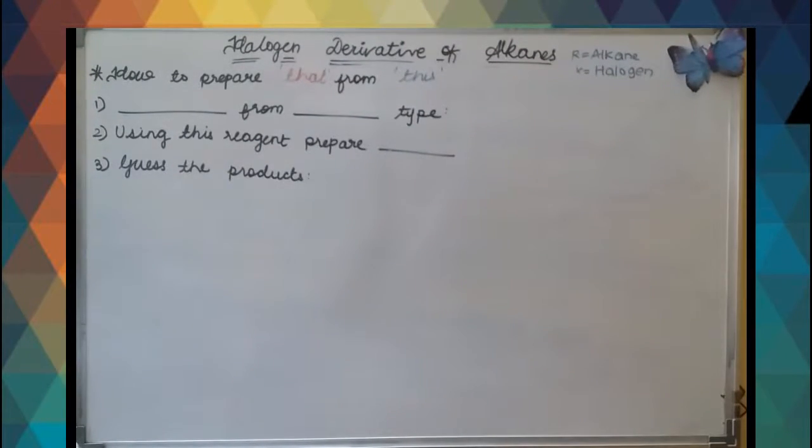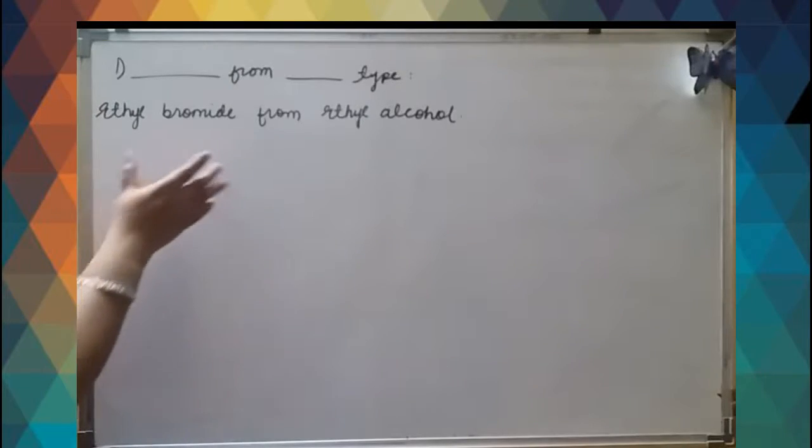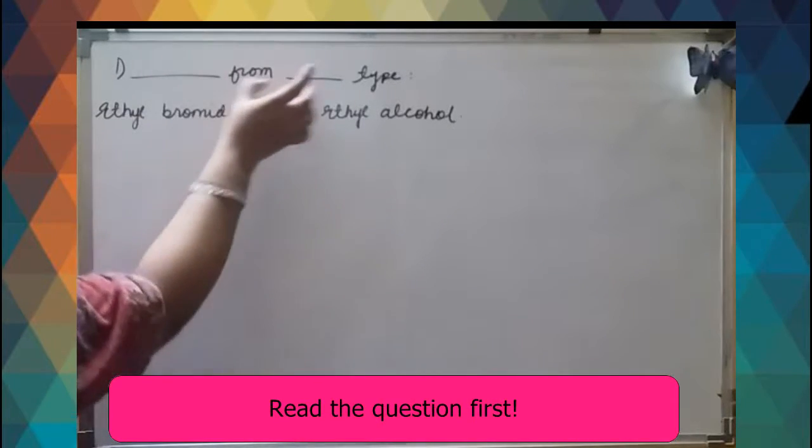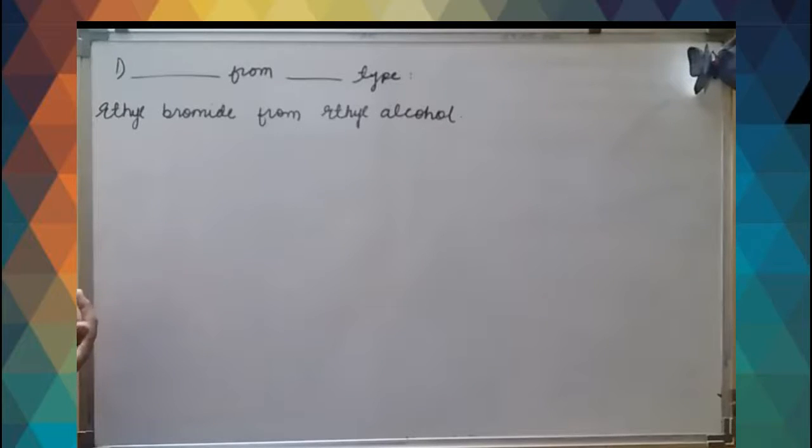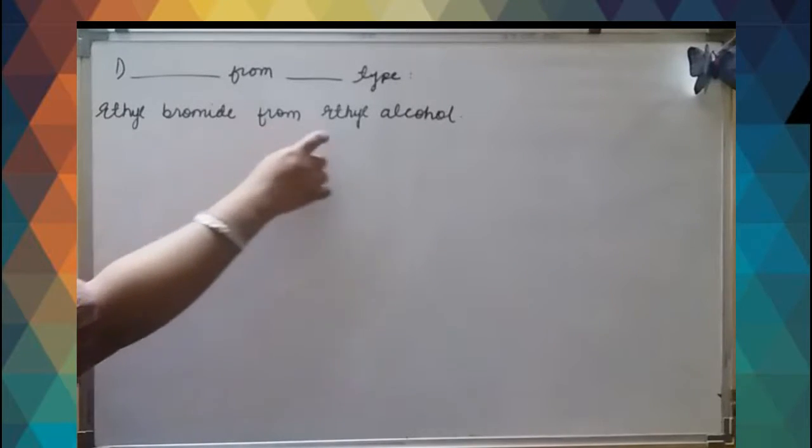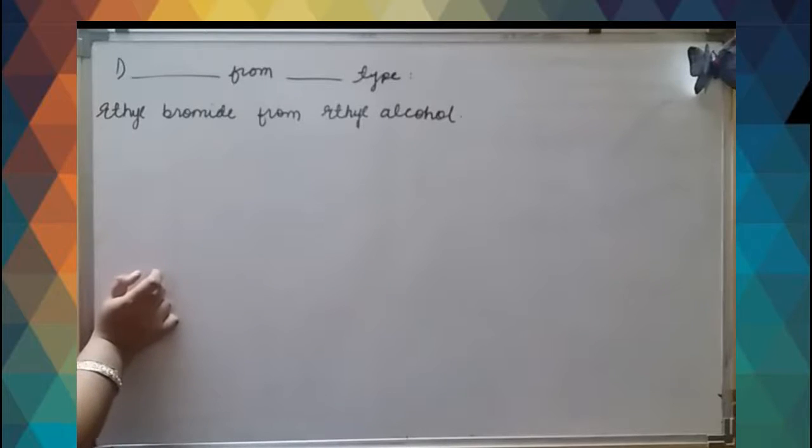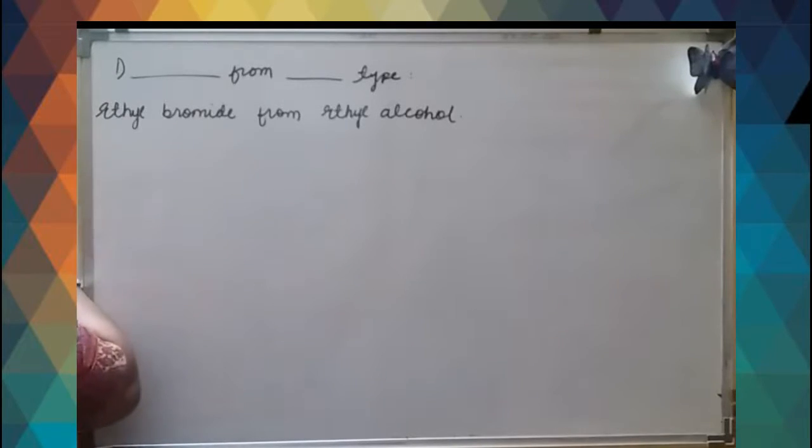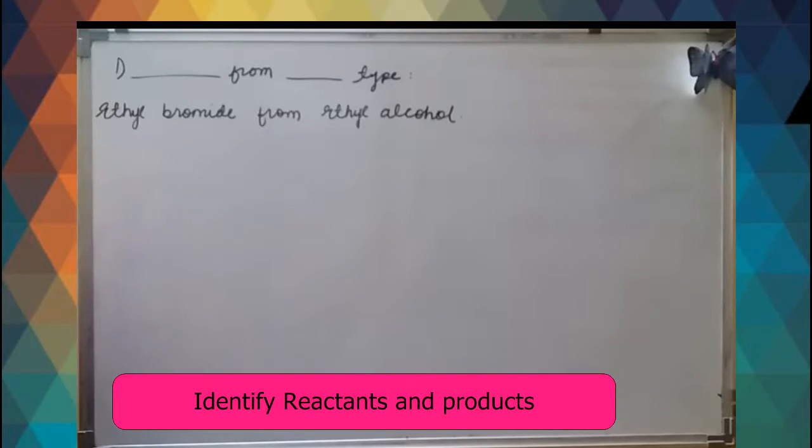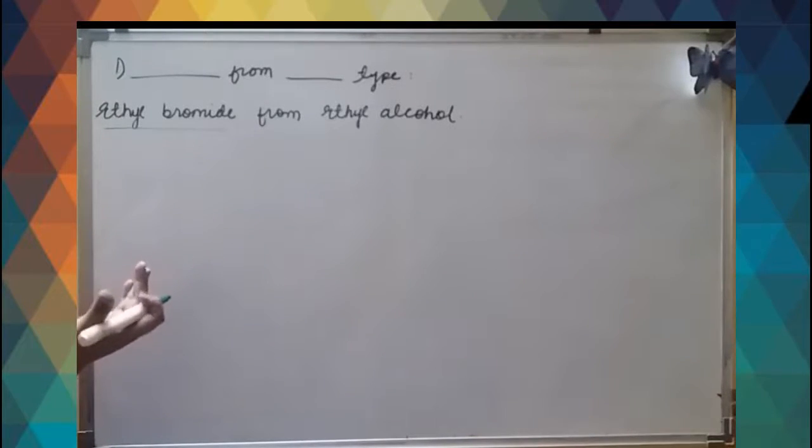Here we have an example of 'dash from dash' type. I have taken an example - we have to prepare ethyl bromide from ethyl alcohol. First let us identify what is reactant and what is product. This is what you have to prepare, so this is our product.